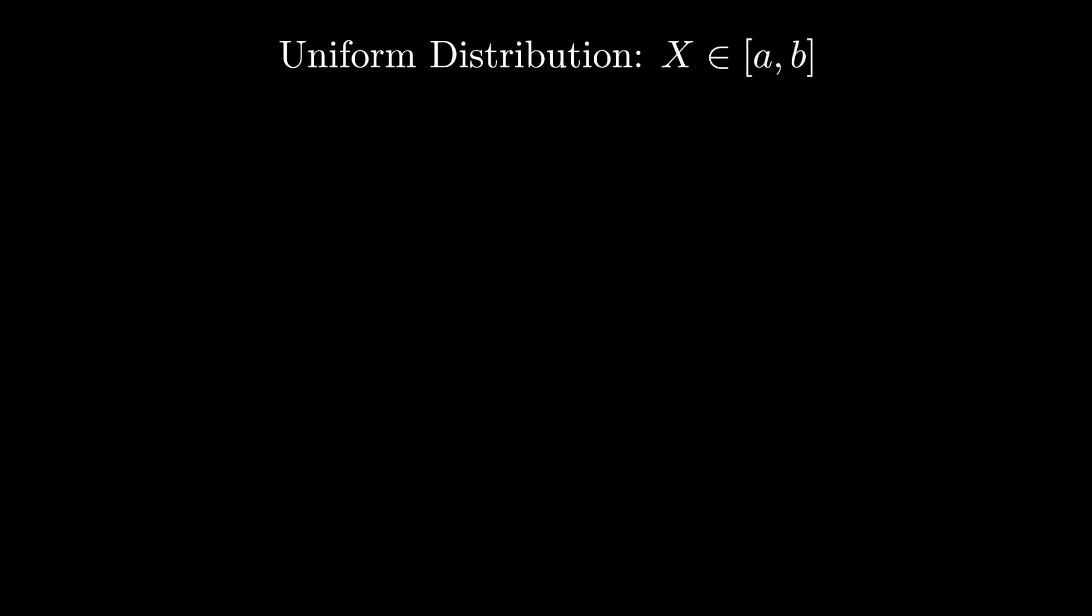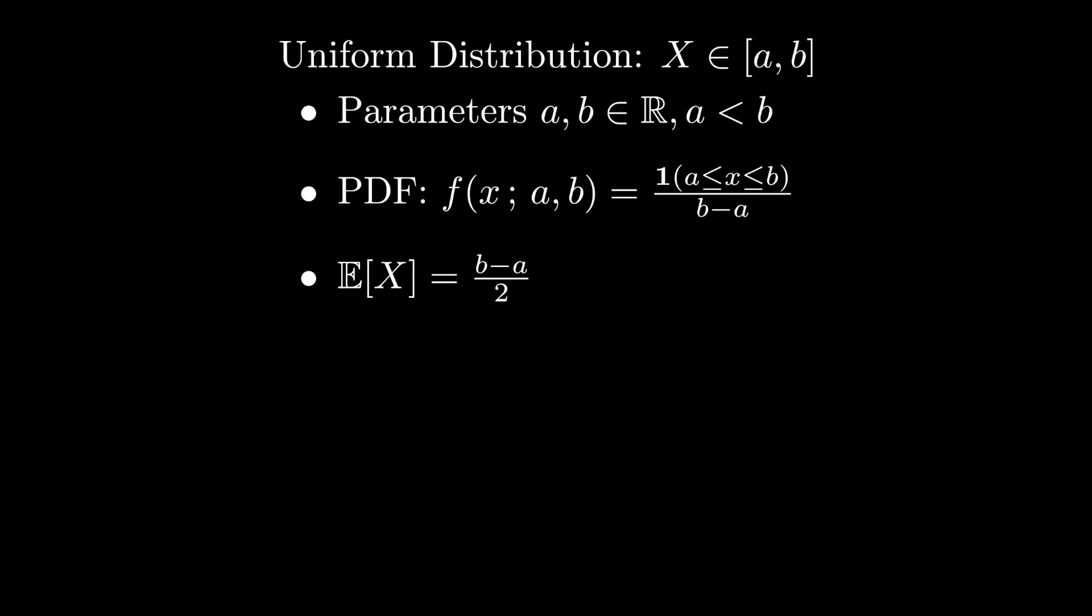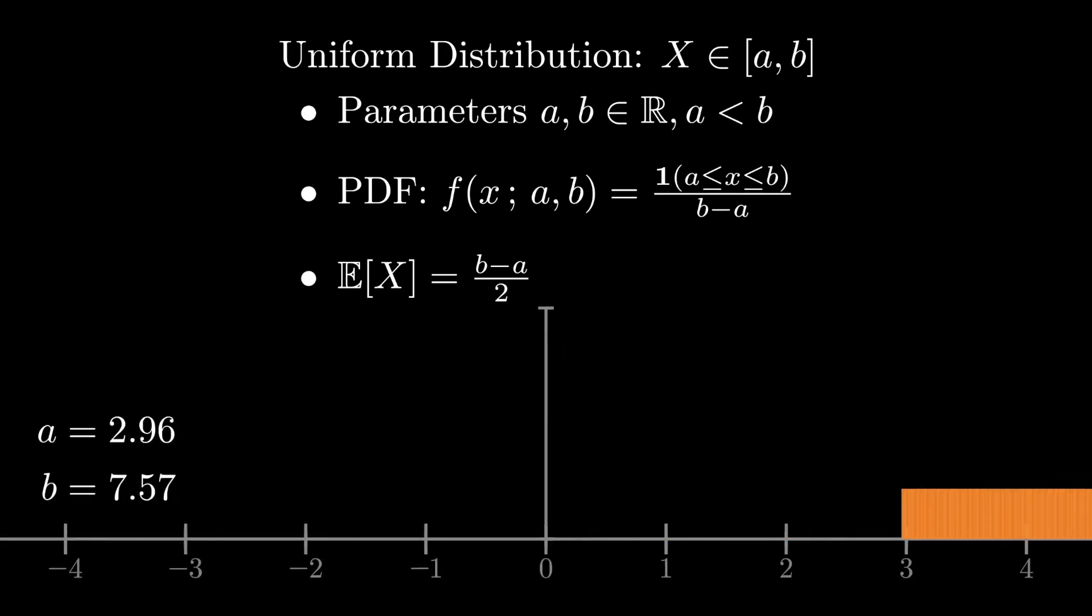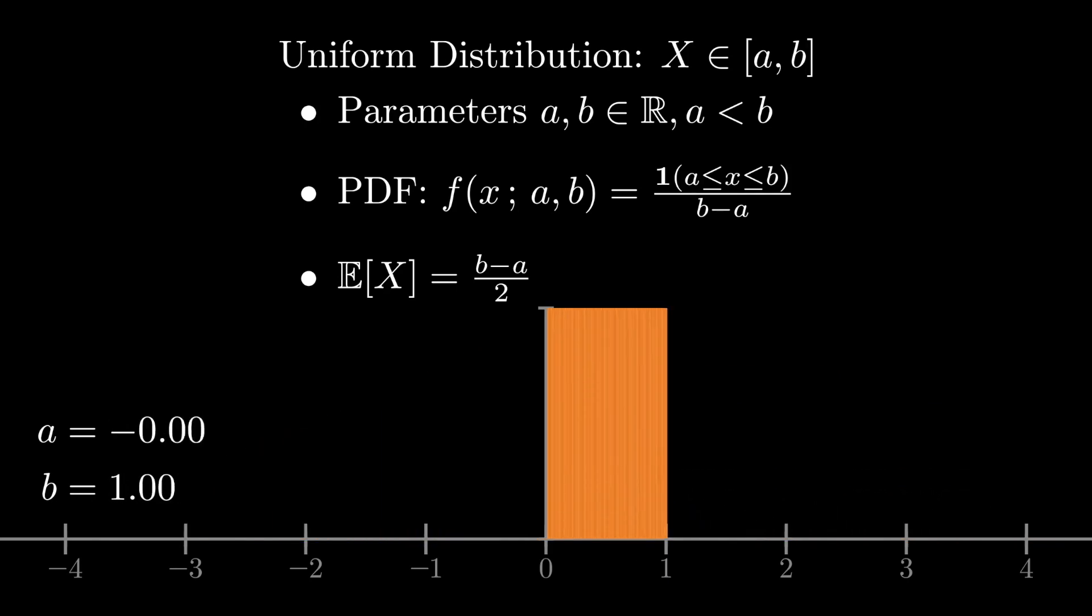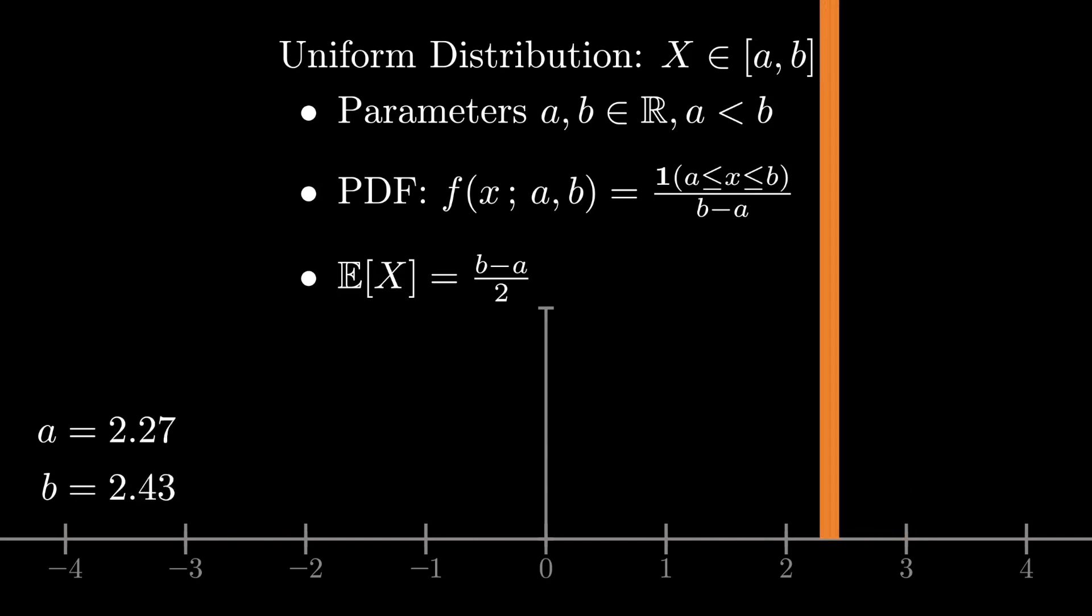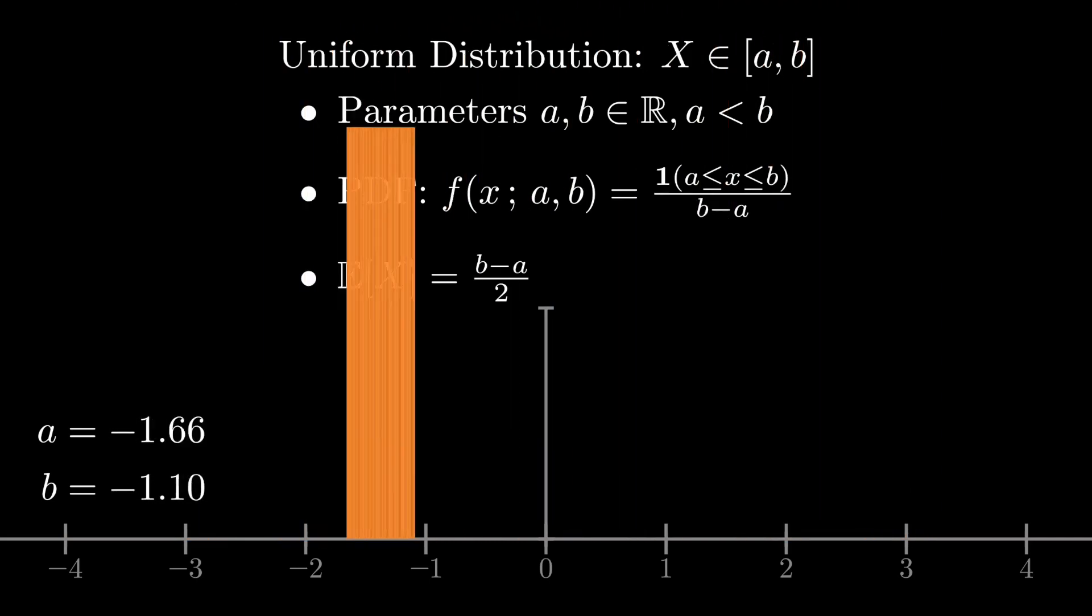And then finally, we come back around to a very simple distribution, the uniform distribution. The uniform distribution here is specified by its endpoints, and it has equal density between those two endpoints and zero everywhere else. I'm writing its probability density function here as an indicator function that is one if the value x is between a and b and zero otherwise.